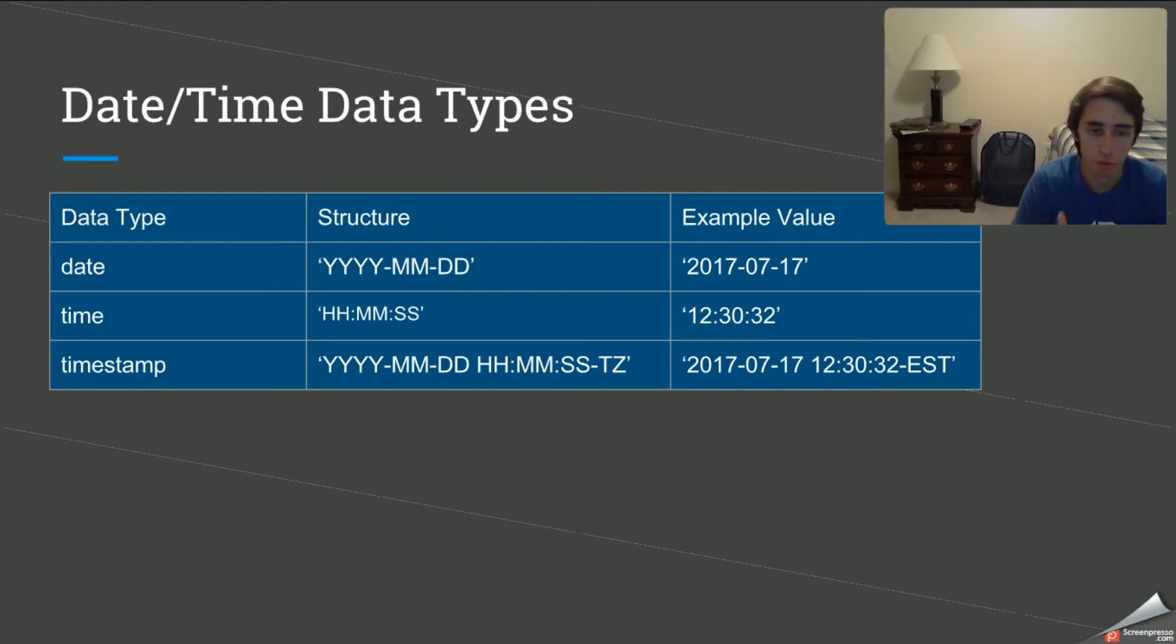And then we have the full timestamp. Now this is something that you'll probably see most commonly because when a day is being recorded, you want to get the date and you also want to get the time of that date. So you have the year, the month, the day, and then you have the hour, the minute, the seconds, and then what's really important is the time zone. And that is an important variable that I think a lot of people sometimes forget. You got to have the time zone in there, at least in PostgreSQL.